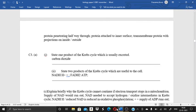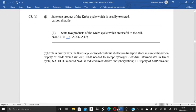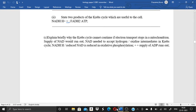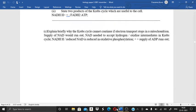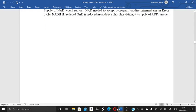So next question is, state one product of Krebs cycle which is usually excreted, that is carbon dioxide. Next question, state two products of Krebs cycle which are useful to the cell, ATP and NADH H+. Explain briefly why the Krebs cycle cannot continue if electron transport stops in mitochondria. I have already given you the answer. You can just check out the answer. If it is not clear to you, you can write down in the comment box.